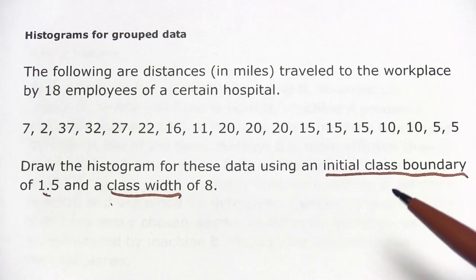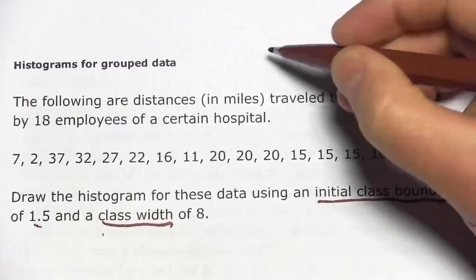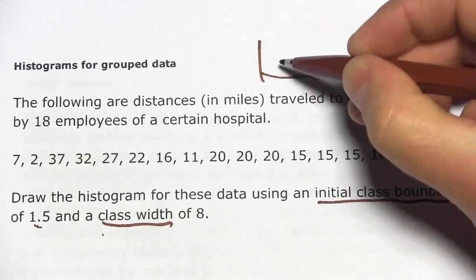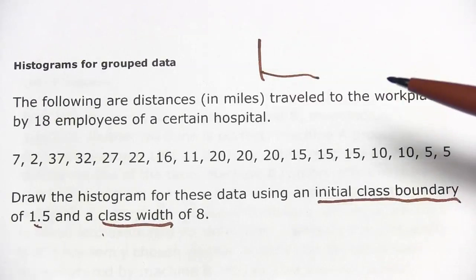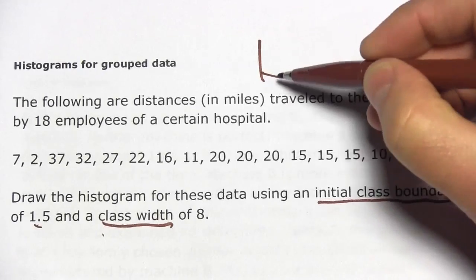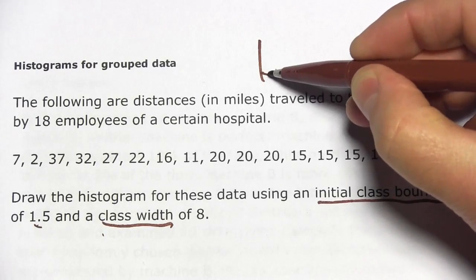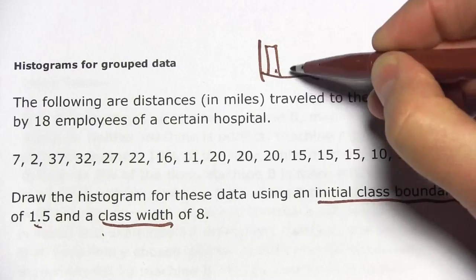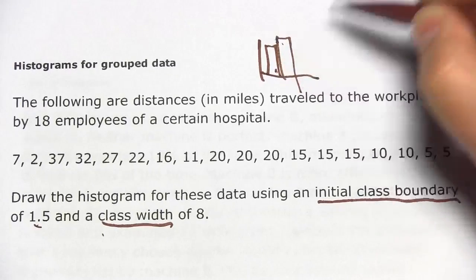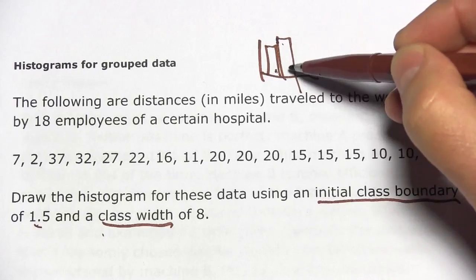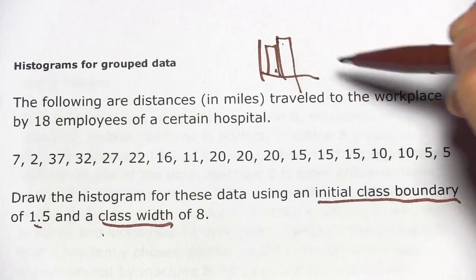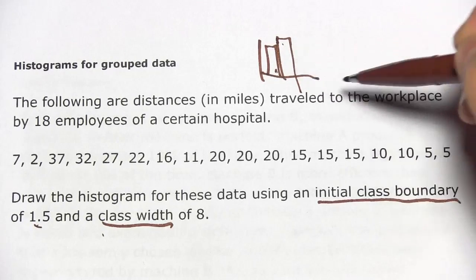So what does all that mean? Well, a histogram is like a bar chart and the bars represent groups of these numbers. So you might say from 1 to 10, if you drive from 1 to 10 miles, you're in that bar. And if you drive from 10 to 20 miles, you're in that bar. And how tall they are reflects how many people are in that particular group or class.